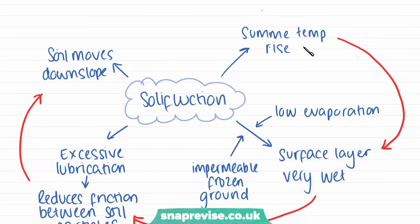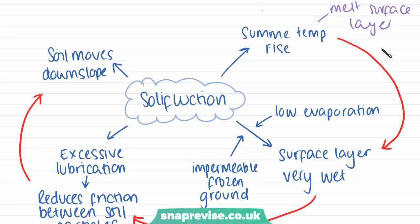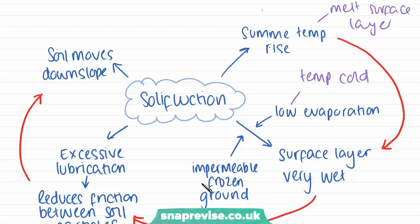Solifluction occurs when summer temperatures rise enough to melt large amounts of water in the surface layer of the permafrost. This surface layer then becomes very wet because the water isn't able to move anywhere — evaporation can't take place due to the cold temperatures, and the water can't sink into the ground because the ground is still frozen beneath it.